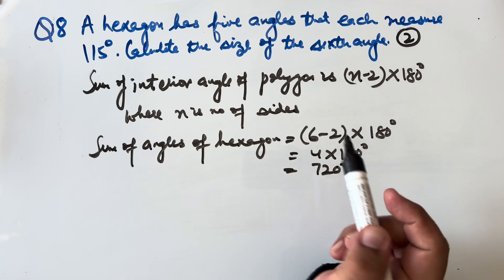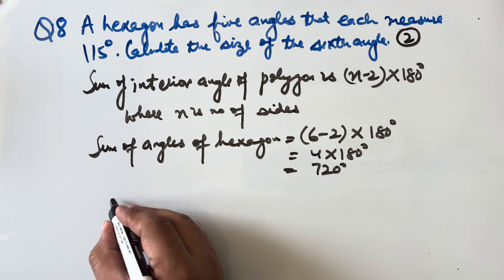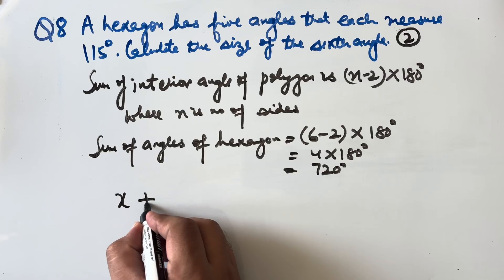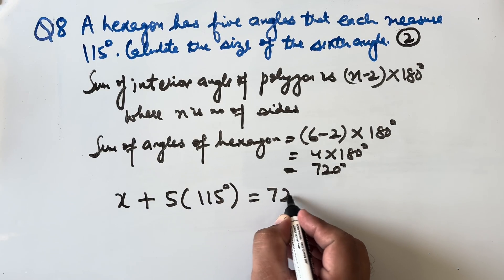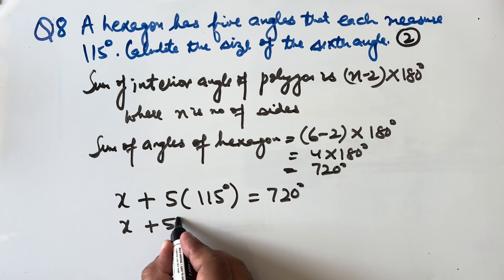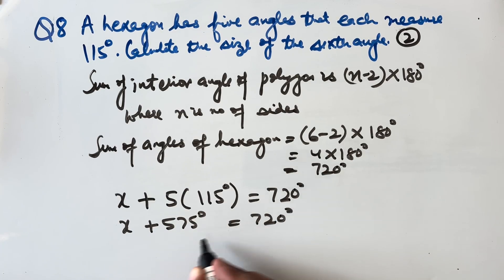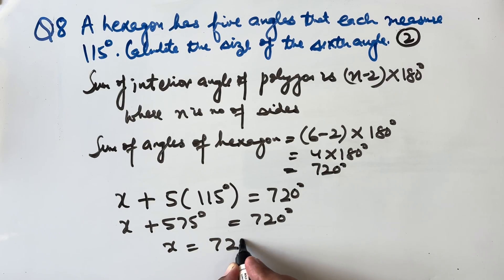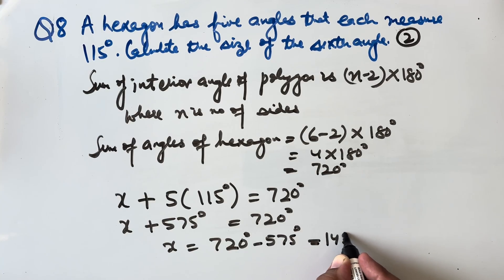The 5 known angles are each 115°. Let the 6th angle be x. Then x + 5 × 115° = 720°, so x + 575° = 720°, giving x = 720° − 575° = 145°. The 6th angle is 145°.